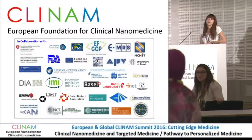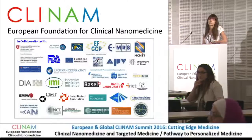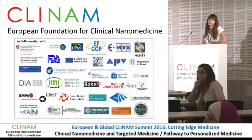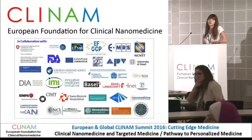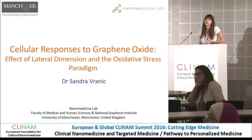Just a technical question: did I understand correctly that when you did the Annexin-5 assay for live, dead, and apoptotic cells, you looked only at the attached cells and not the detached cells? The reason for asking is that when cells undergo apoptosis, they detach — so aren't you potentially missing an apoptotic population?